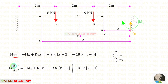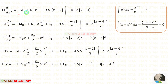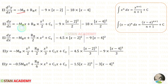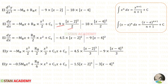Now let us equate Mxx with EI d²y/dx². Let us integrate this equation on both sides. When we integrate d²y/dx² we get dy/dx. When we integrate −MB we get −MBx. When we integrate X we get X²/2. When we integrate (X−2) we get (X−2)²/2. When we integrate (X−4) we get (X−4)²/2. C1 is the constant. 9/2 gives 4.5 and 18/2 gives 9.